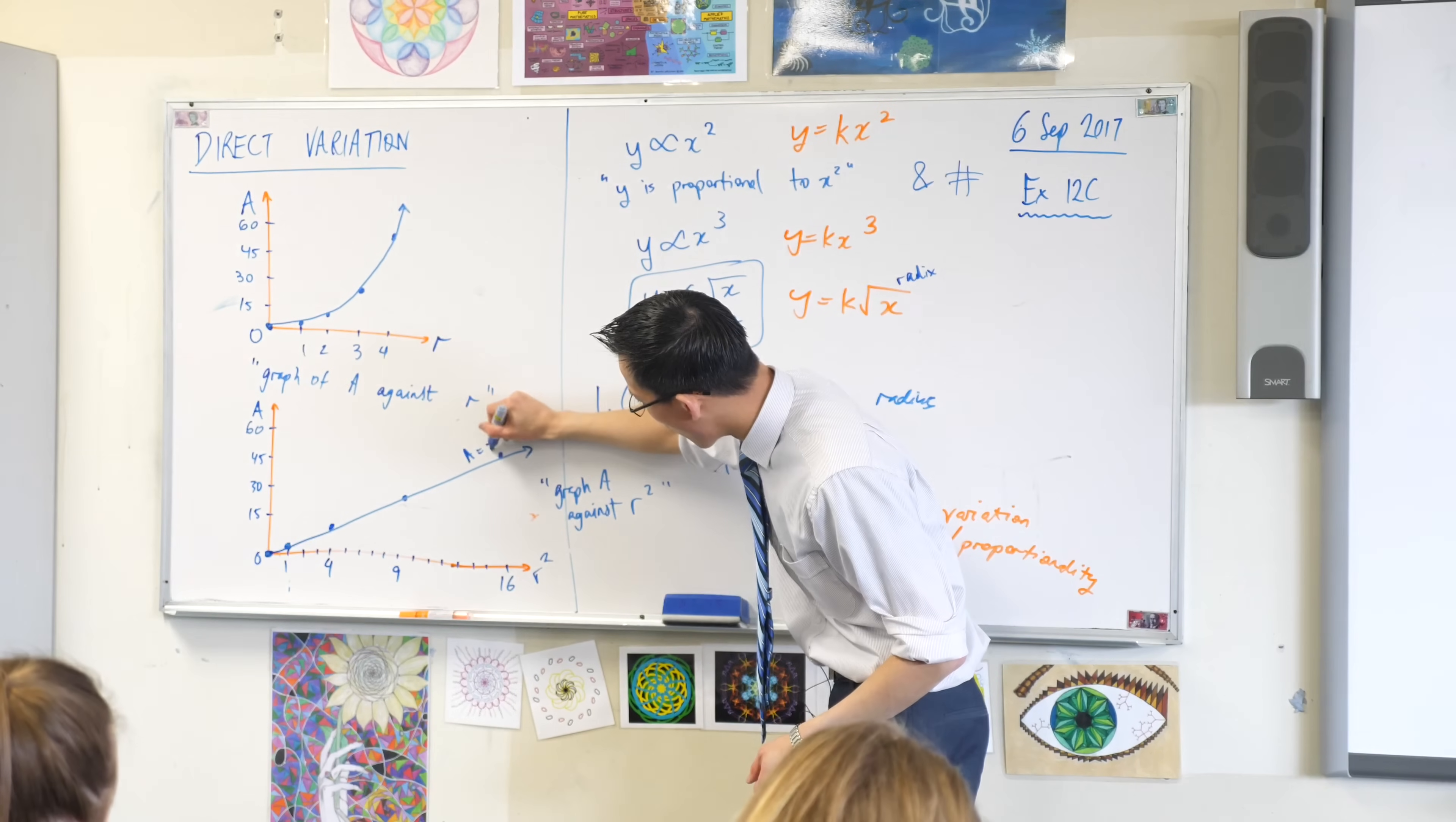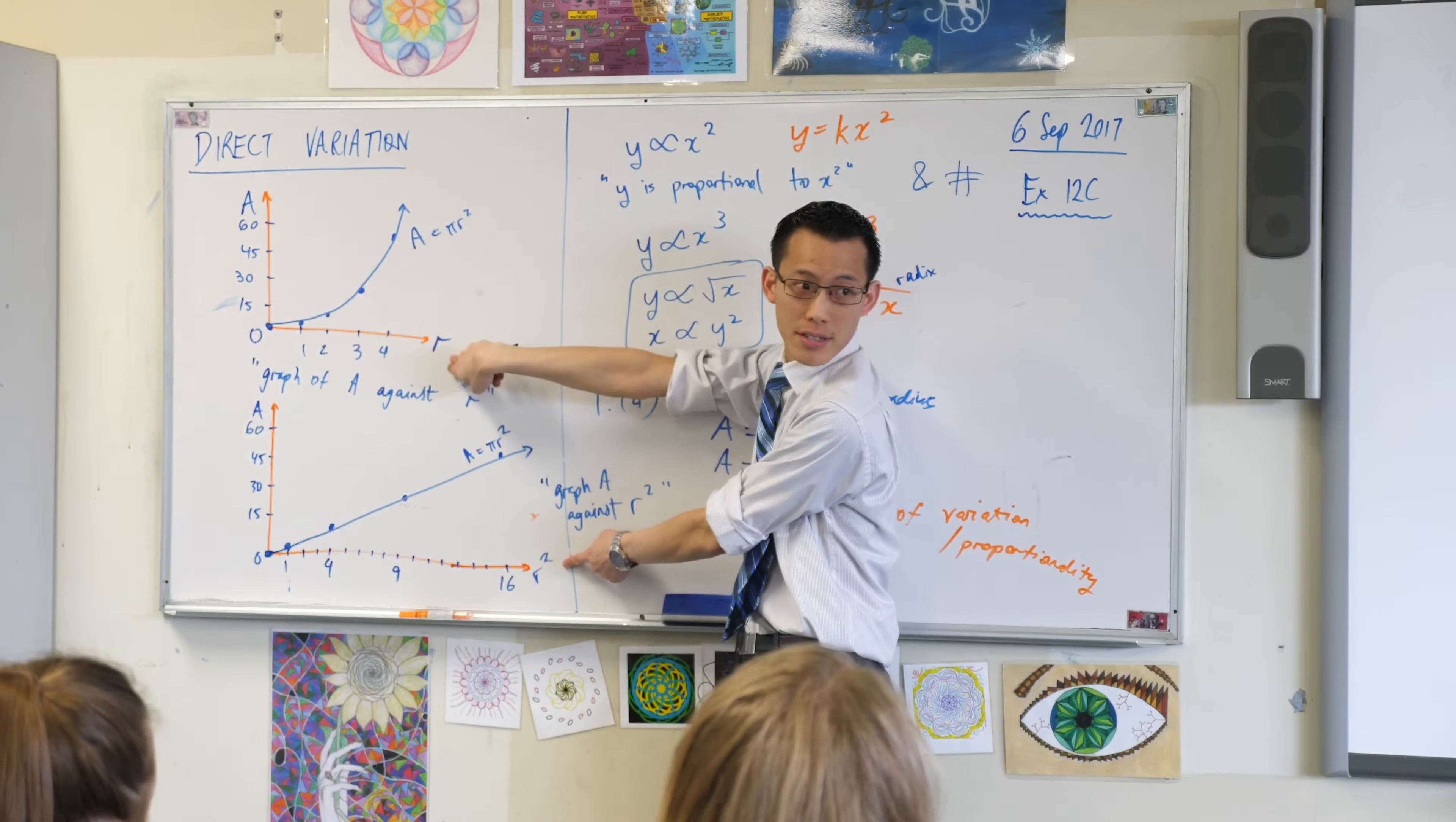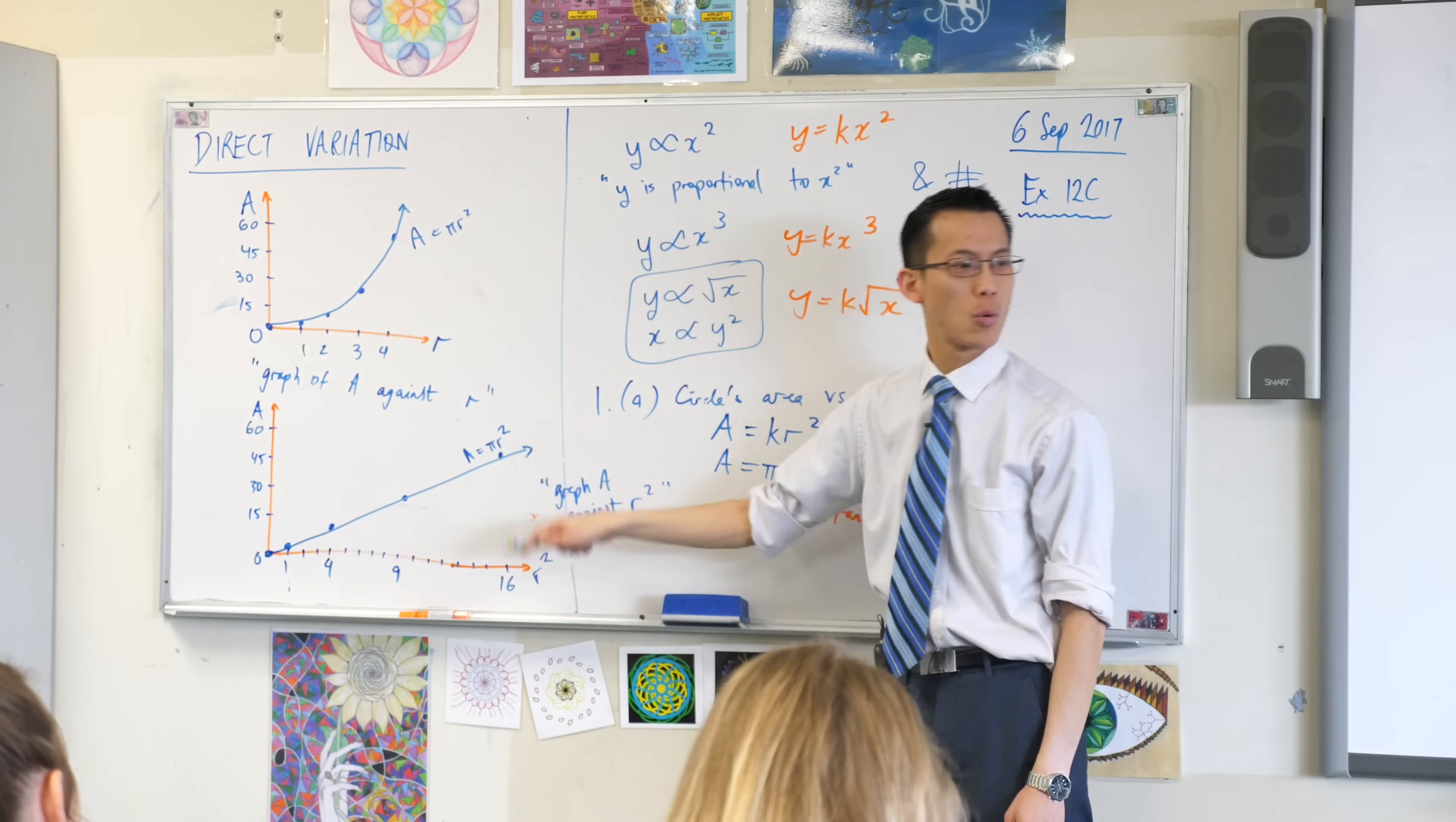So the equation of this line is exactly the same as what we had before. This is a equals π r squared. This is also a equals π r squared, but my axes are different. Do you see that? My axes are different. So you get a different shape, because you're comparing a different kind of quantity.